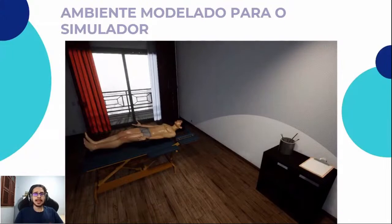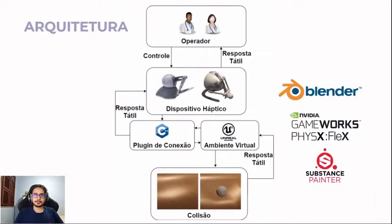Este é o ambiente virtual do simulador, tendo como elementos principais: a cama, maca de massagem, o modelo humano, a proxeta e o pote com as agulhas de acupuntura. A arquitetura do sistema consiste no controle do operador via dispositivo háptico, que realiza comunicação com o ambiente virtual na Unreal Engine 4 através do plugin háptico. Em consequência da colisão com o objeto deformável, é ativada uma resposta tátil do dispositivo háptico, promovendo melhor experiência do usuário.